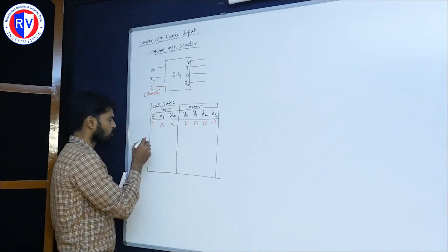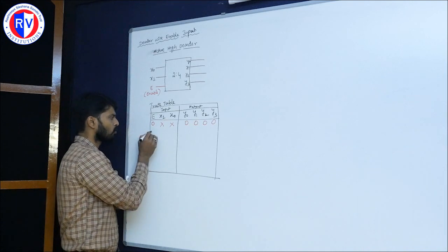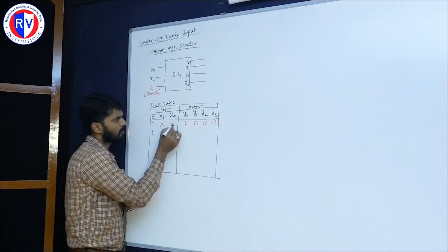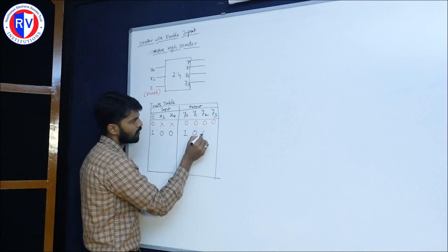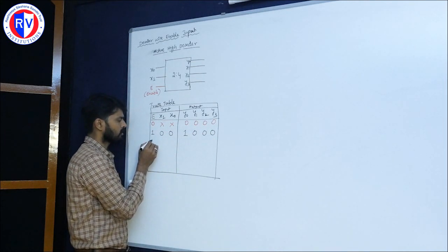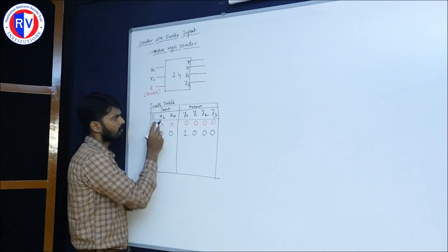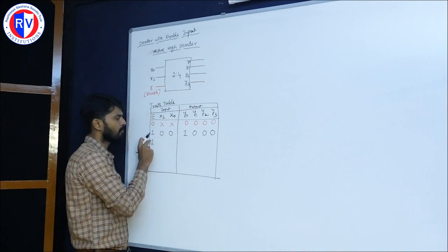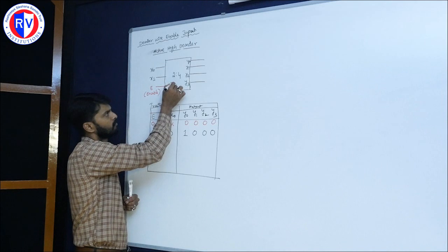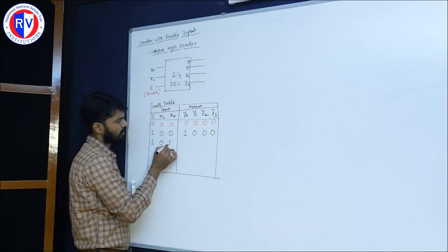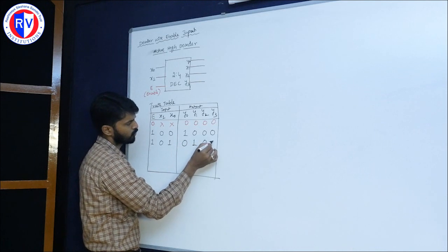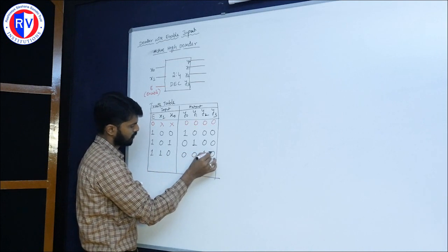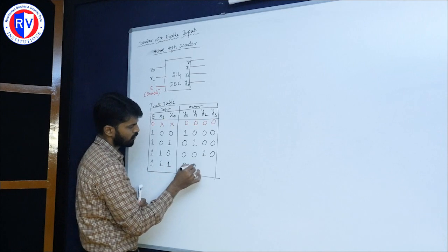If enable is 1, then only respect goes to x1 and x0. When enable is 1 and x1 x0 is 0 0, y0 output is 1 and remaining all are 0. Similarly for the next condition, enable is 1 and x1 x0 is 0 1, then y1 is 1 and the other two are 0. Then for 1 0, y2 is 1, and finally for 1 1, y3 is 1.